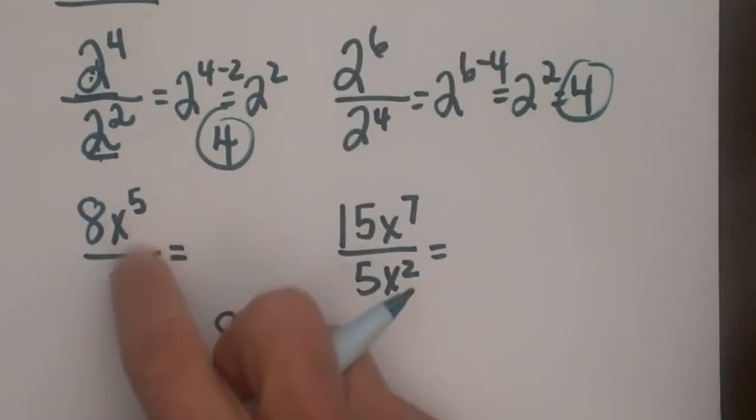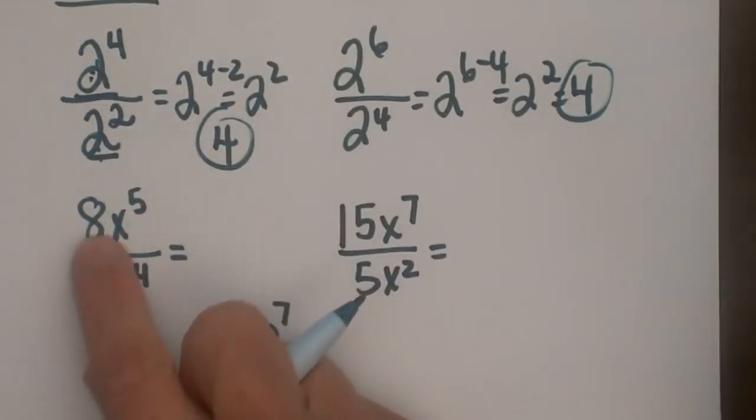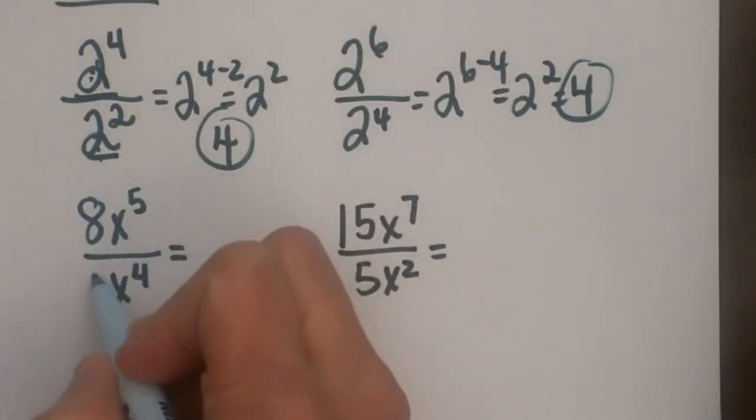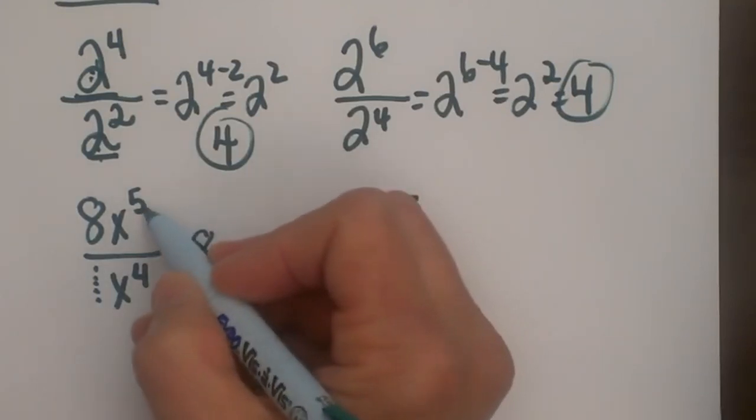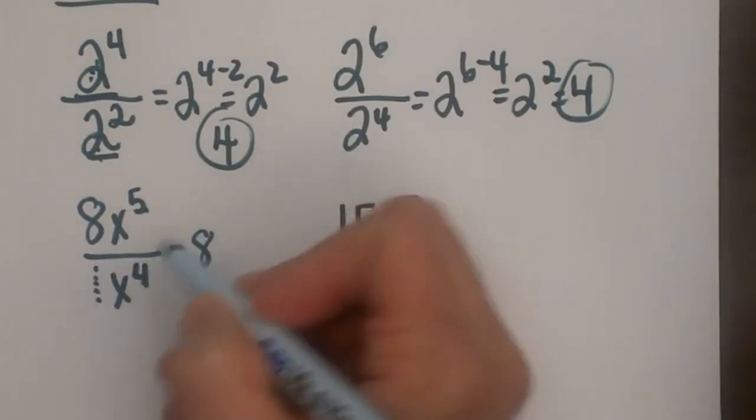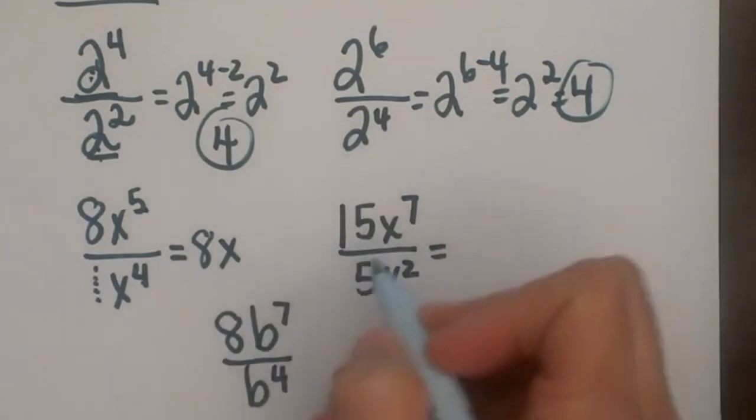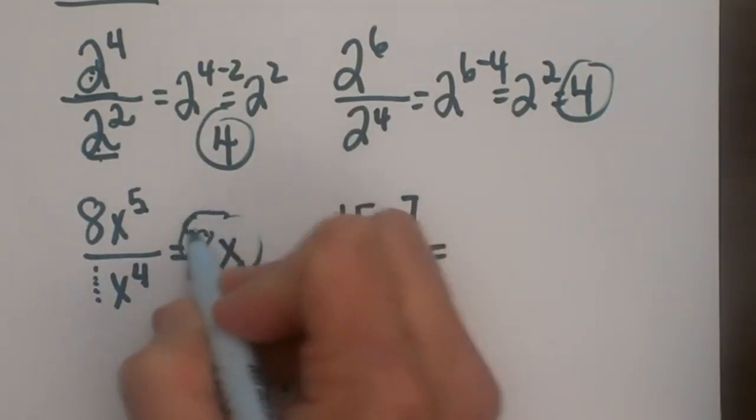Now let's look at ones with variables. We have 8x to the 5th divided by x to the 4th. So since we don't have a coefficient to divide here, we're just going to say 8 divided by our little invisible 1 is just still 8. But then x to the 5th divided by x to the 4th is x to the 1st power. So there's our answer for that one.